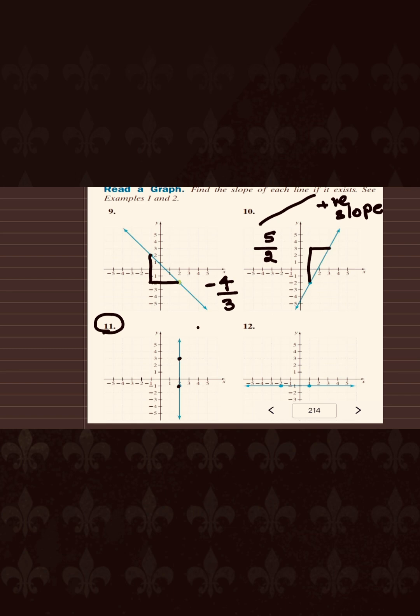For number 11, we need to remember if the graph is parallel to the y-axis, it always passes through the common x point. In this case that x point is two. And when you see such a graph, then the slope is always undefined.